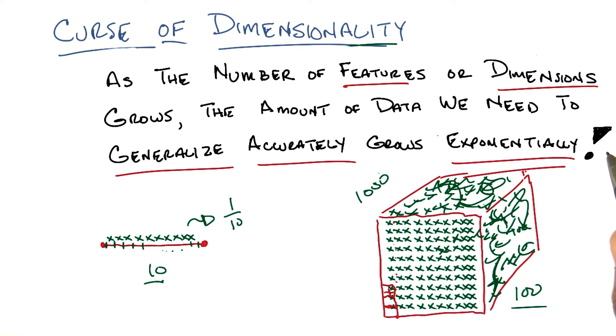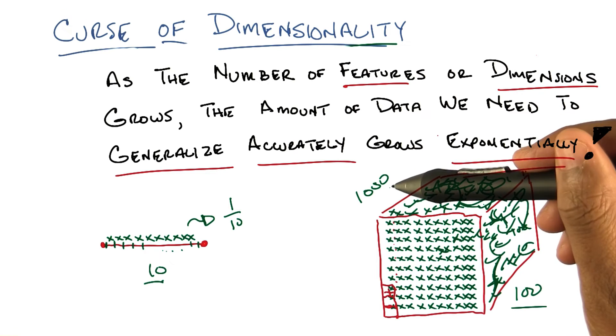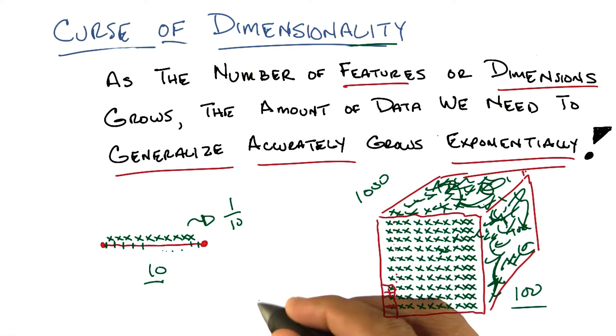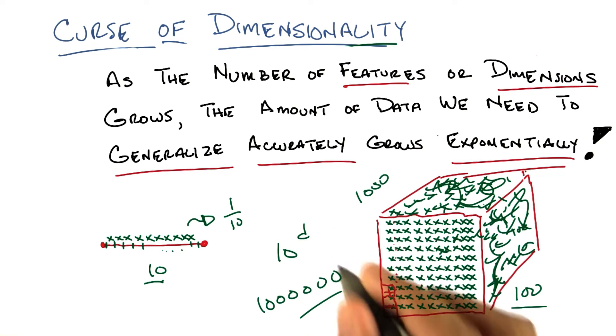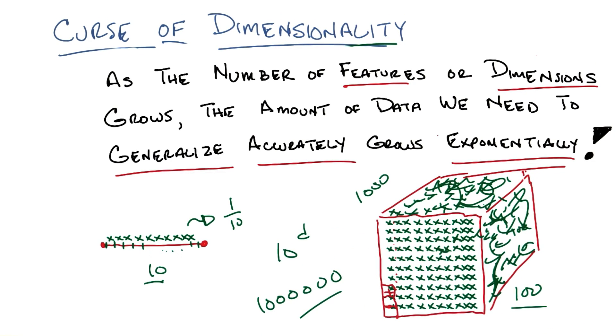Right. So if we went into four dimensions, which I'm not going to draw, then we would need not 1,000 but 10,000 points. And in five dimensions, we would need 100,000 points. In six dimensions, we would need a million points, and so on and so forth. So something like 10 to the d, where d is the number of dimensions. Wow.